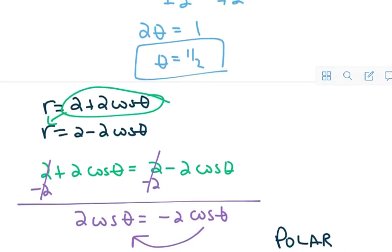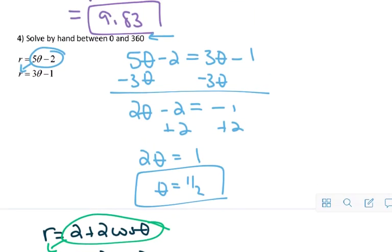And if you use the table to find the solutions, you're looking for where your radius values are the same. Now, I do have to go back, because although theta is equal to 1 half, that doesn't tell me what r is. And I forgot that the solution to a system of equations is the order pair where the two graphs intersect.